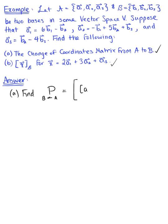The first column is going to be the coordinates of vector a₁ relative to basis b. The second column vector is the coordinates of vector a₂ relative to basis b. And the third column is defined as the coordinates of vector a₃ relative to basis b.